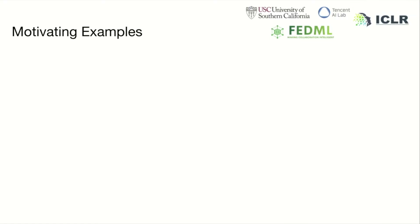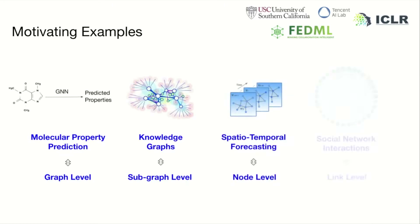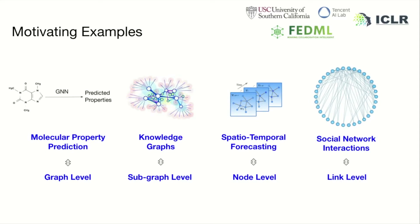We propose a platform called FedGraphNN to accelerate this exciting research direction. We think that FedGraphNN should cover different types of GNN-based federated learning for various representations. These can be graph-level, subgraph-level, node-level, and link-level representations. For instance, in the AI-based drug discovery industry, pharmaceutical research institutions would benefit from other institutions' private data, but neither can afford to disclose their data for reasons like user-side privacy, regulation restrictions, and commercial competition.